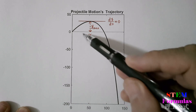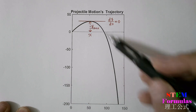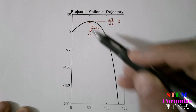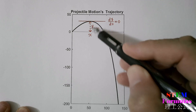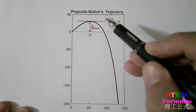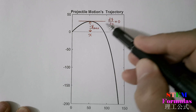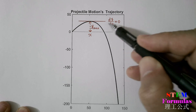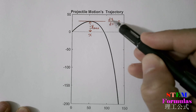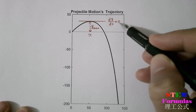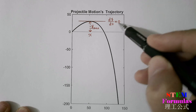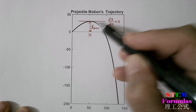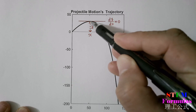From the trajectory curve, to find y maximum, we only need to find the slope, which is the derivative dy/dx equal to 0. At this point, y reaches maximum.